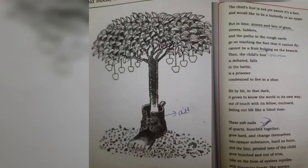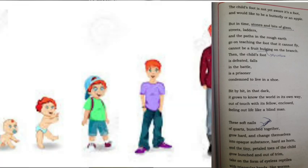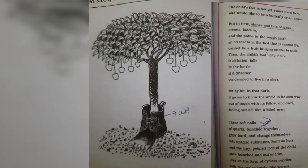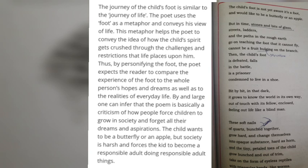"To the Foot from its Child" by Pablo Neruda is a narrative descriptive poem which narrates the journey of a child's foot until it becomes an adult foot and beyond until it dies. The journey of the child's foot is similar to the journey of life. The poet uses the foot as a metaphor and conveys his view of life.